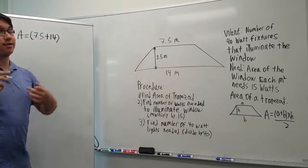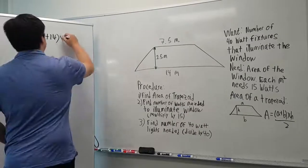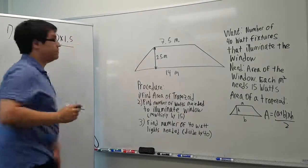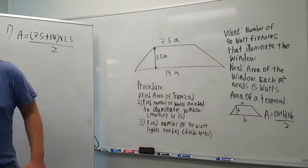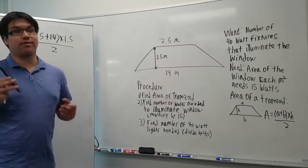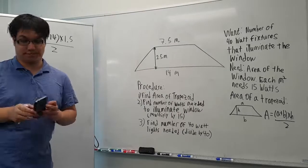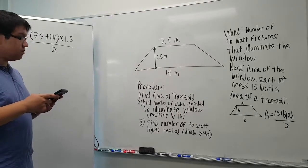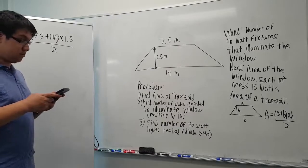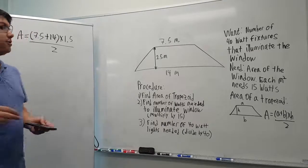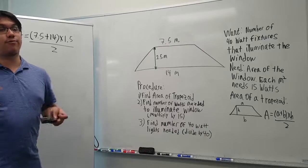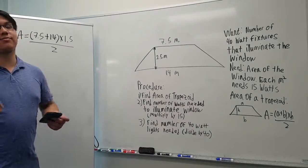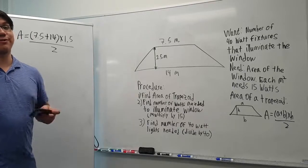1.5 is our h, and we take all that divided by two. I'm going to evaluate this in my calculator. Remember to do 7.5 plus 14 before you multiply it by 1.5. What I get is 16.125 meters squared.